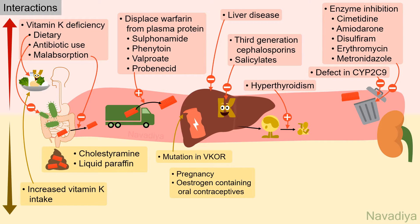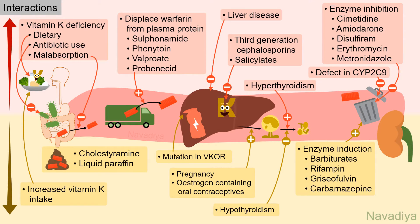In pregnancy and in patients taking estrogen-containing contraceptive pills, synthesis of clotting factors is increased. In patients with hypothyroidism, degradation of clotting factors is reduced. In all these situations, warfarin has to work harder to reduce clotting factor levels. Enzyme inducers like barbiturates, rifampicin, griseofulvin, and carbamazepine increase the metabolism of warfarin. And in patients with nephrotic syndrome, protein-bound drug is lost in urine. All of these reduce the effect of warfarin.